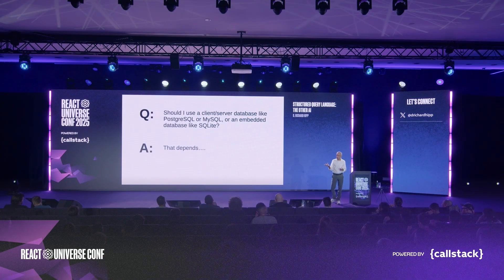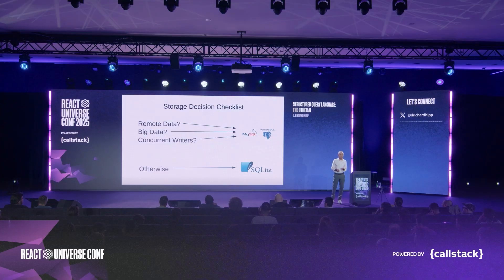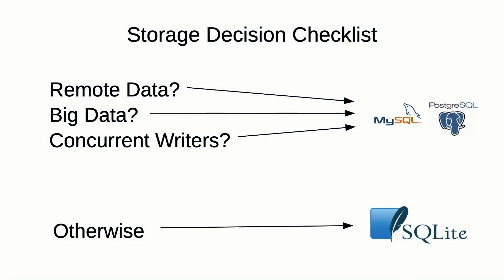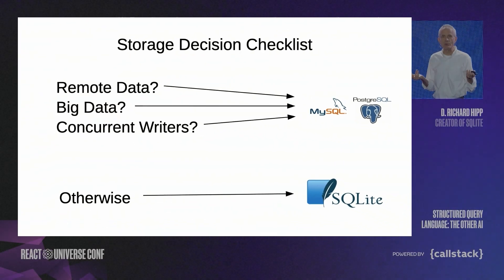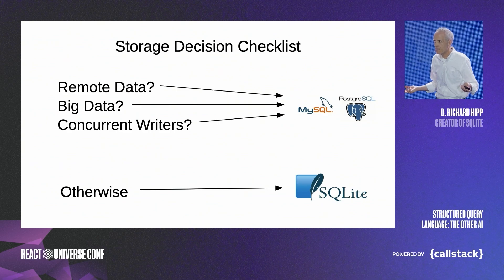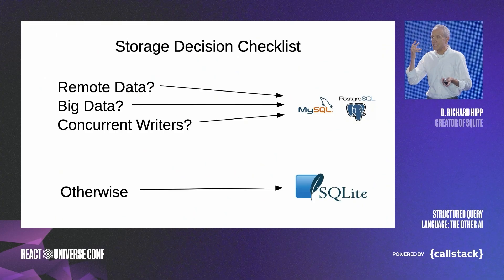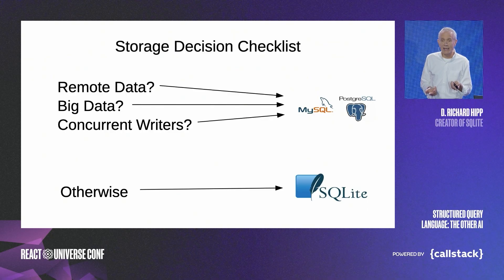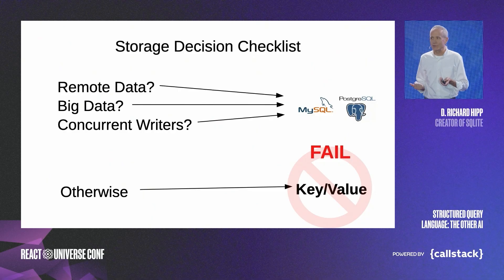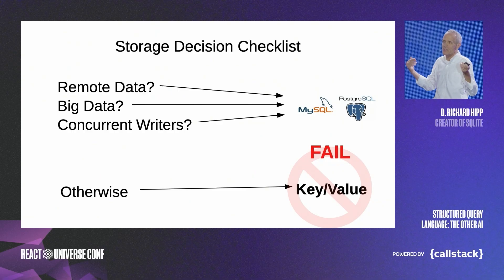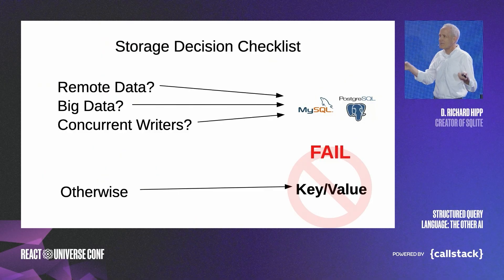So you're going to use SQL. Do you want to use a client-server SQL database engine like MySQL or Postgres, or an embedded database engine like SQLite? That depends on what you're trying to accomplish. Here's a checklist: if your data is on a different computer and you have to go across the network, use a client-server database like MySQL or Postgres. If your data is big — bigger than you're willing to put in a single file on disk, more than a few terabytes — use a client-server database. Or if you have lots of concurrent writes, use a client-server database. But most problems don't meet these requirements and you can go with SQLite — it works great. Where people mess this up is they say they don't need a database at all and just open files on disk or use a key-value store. No — if you do that, you're giving up your AI assistant. Make use of the AI.